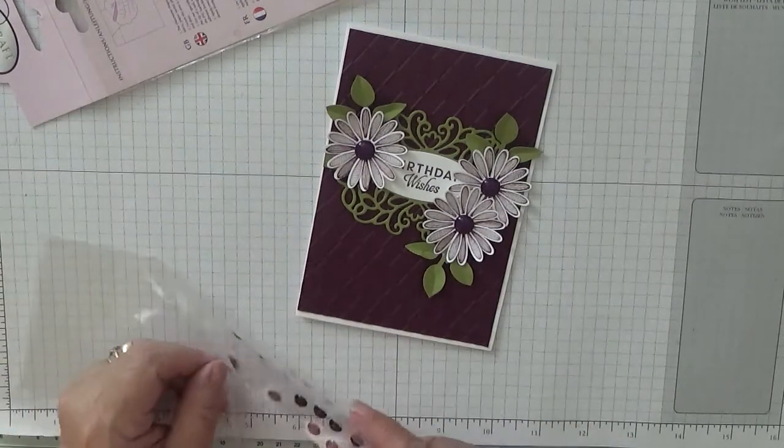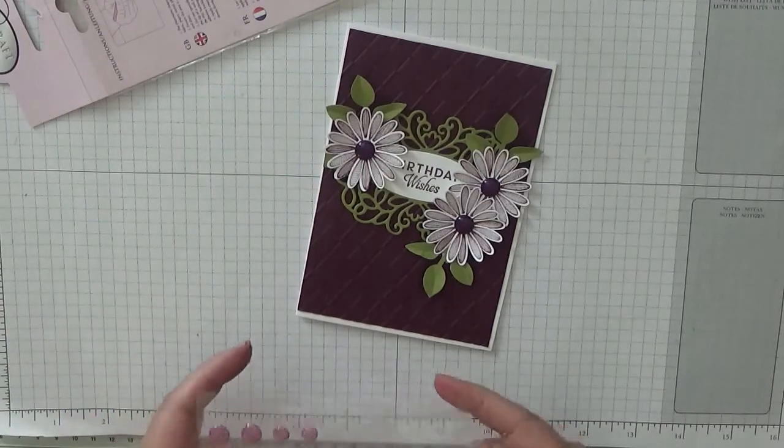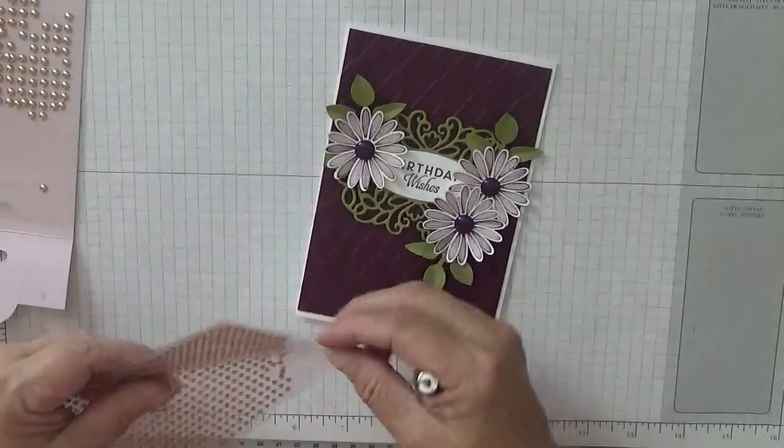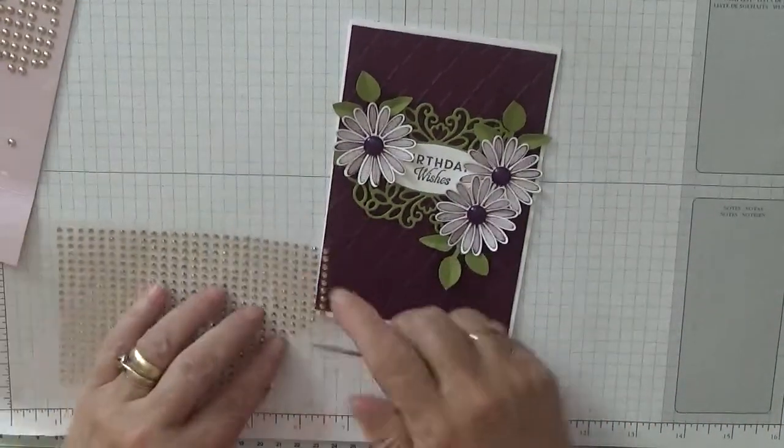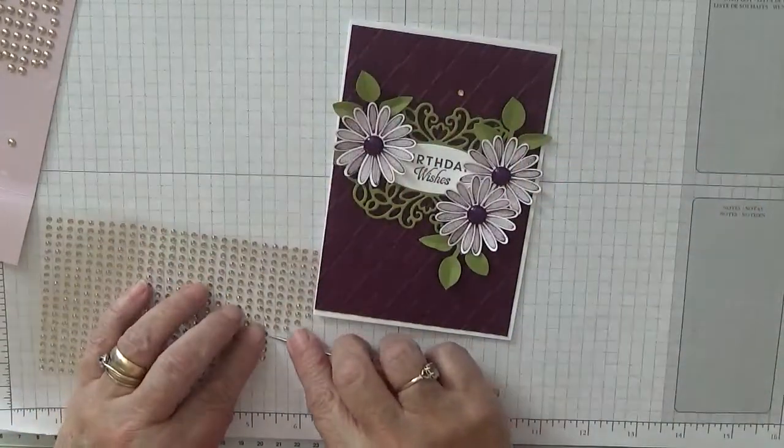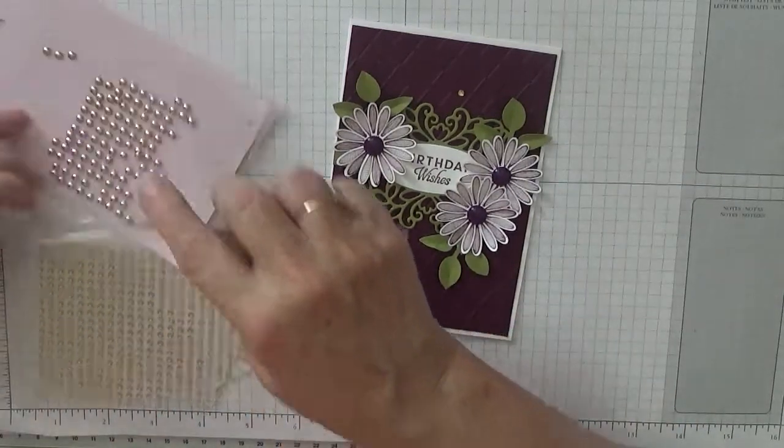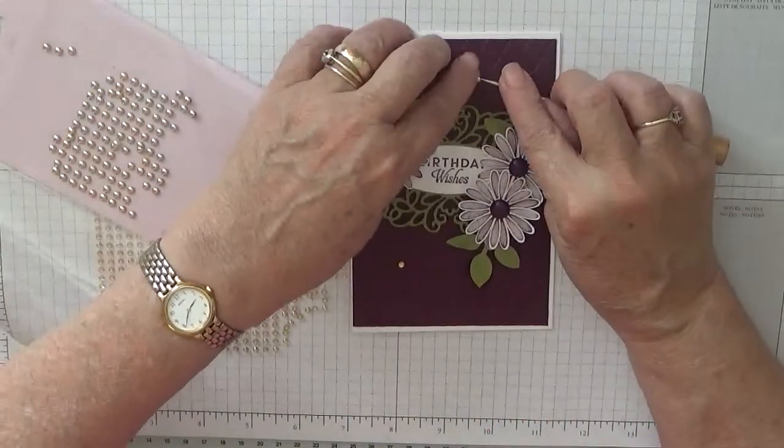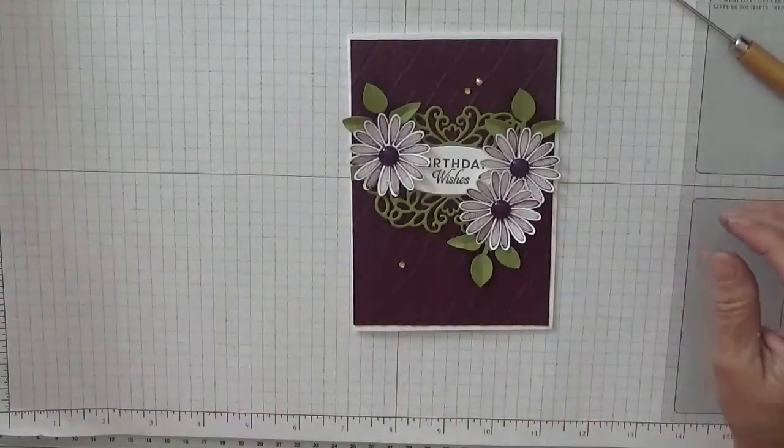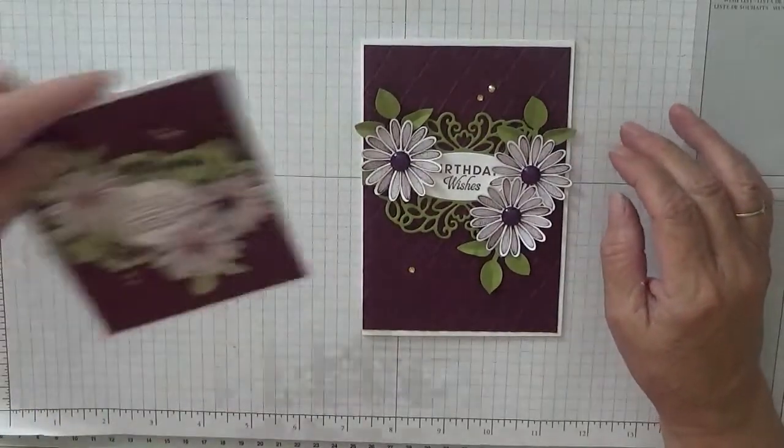And I'm also going to do, this is quite pretty, they've got sparkly bits in them. Three gold gems. So there's one of them, one of them, and one of these. Mixture of gems.